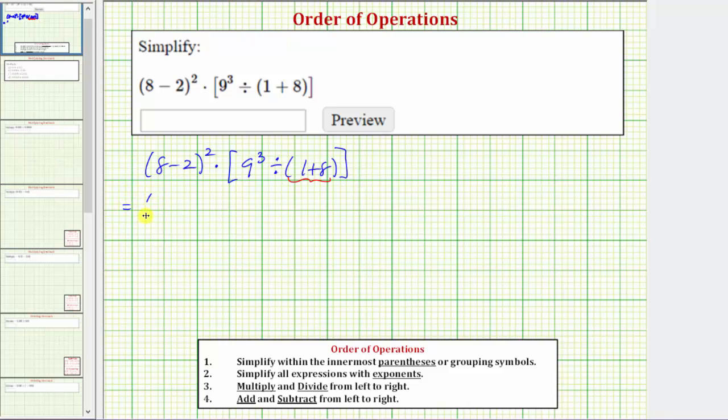So this is equal to the quantity eight minus two squared times the quantity nine cubed divided by nine. Now that we've simplified within the innermost parentheses, we now simplify within the parentheses or grouping symbols, which means we need to simplify within these parentheses and within these brackets. Eight minus two is equal to six. So this is equal to six squared times...